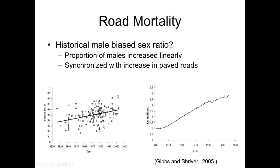They took historical data into account as well. All the data points represented the proportion of the population that were males from 1930 to 2010, tracked over that period. The proportion of males in the populations increased over time, and when you overlay that with the increase in road densities, the two lines are almost parallel — further evidence of a synchronized increase in male-biased sex ratios in these turtle populations over time.